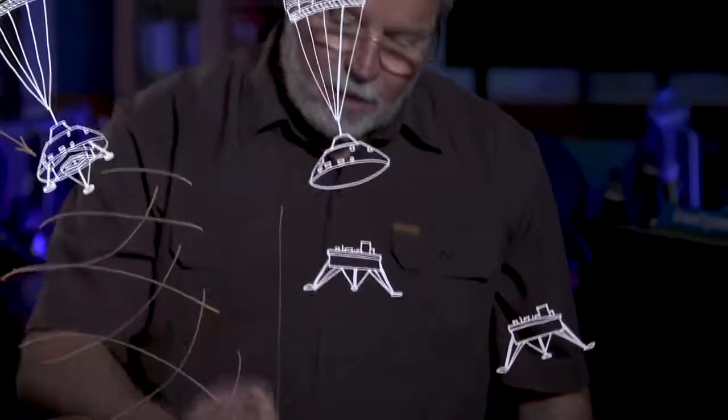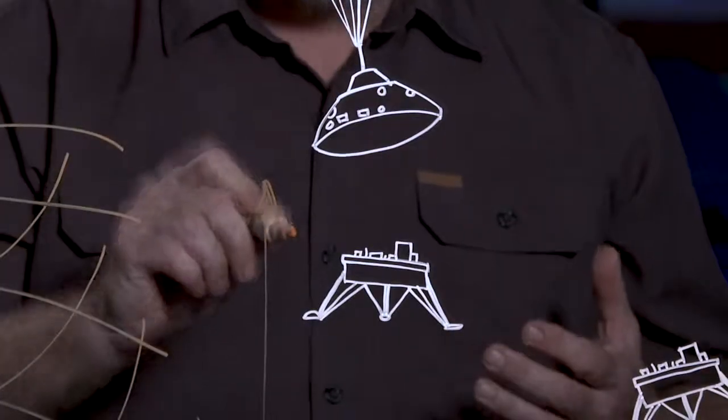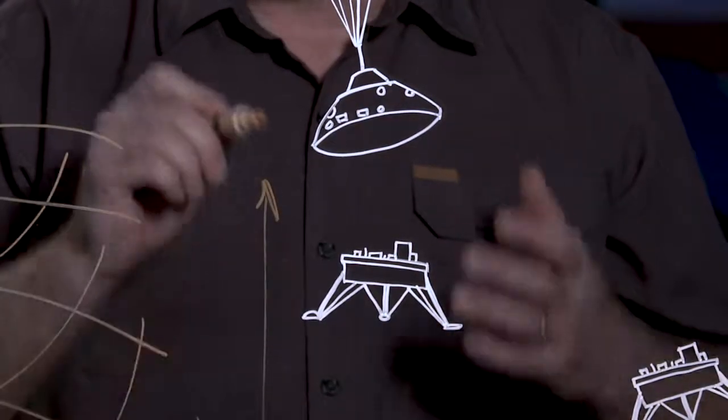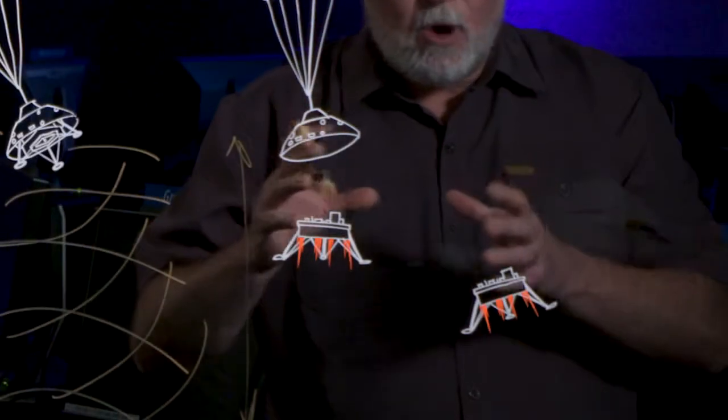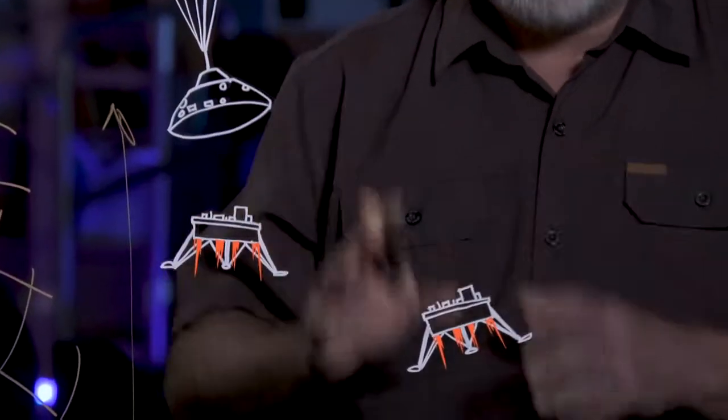At about a mile above the surface of Mars, the lander falls away from the backshell and lights its engines. And very quickly, the vehicle must rotate out of the way so that the parachute and the backshell doesn't come down to hit it.